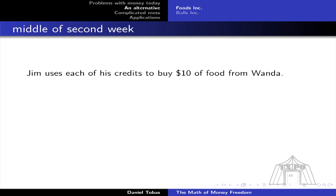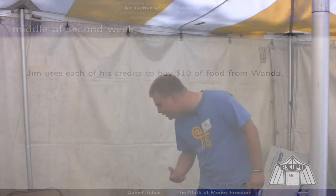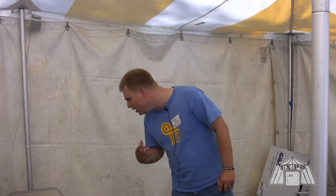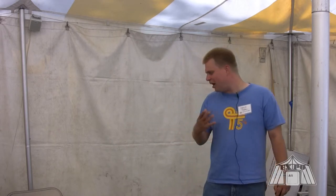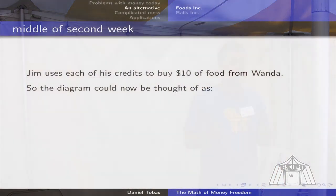After a week goes by, Jim buys $10 of food from Wanda and uses all his credits. Once Jim spends all the credits and gets the food in exchange, the diagram shows Foods Inc. and Jim with no arrows between them because the debt has been relieved.